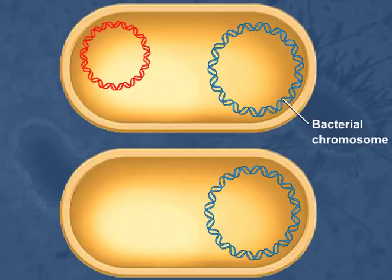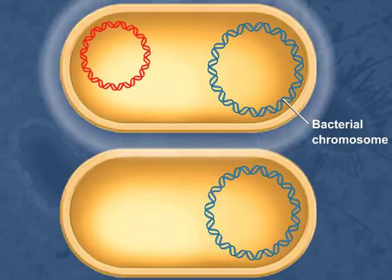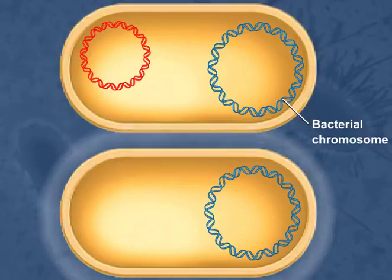Bacterial conjugation is a process of genetic transfer between bacterial cells that requires direct contact between the cells. Many, but not all, species of bacteria can conjugate. Conjugation can occur between cells of the same species or even between cells of two different species.